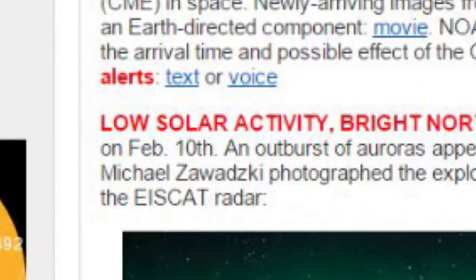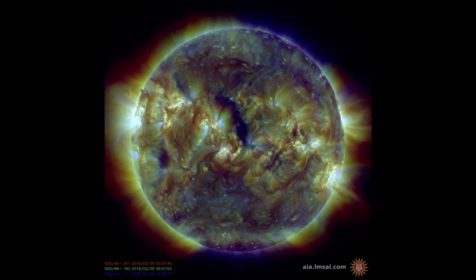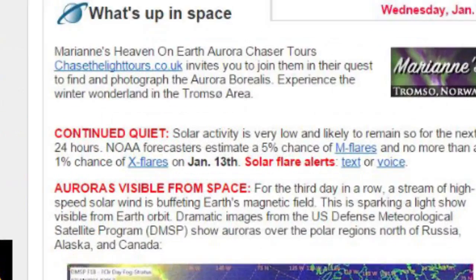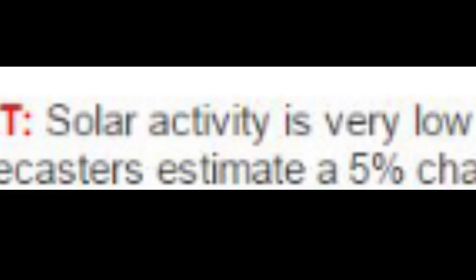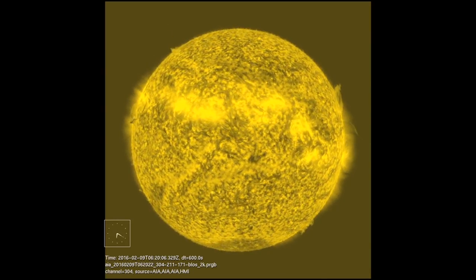Spaceweather.com said that solar activity was low, so that's our key code phrase. When they say solar activity is low it's like a bat signal: go check out the Sun. There's giant firing loops coming out right now.